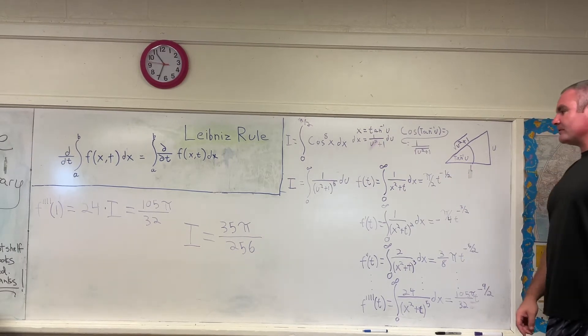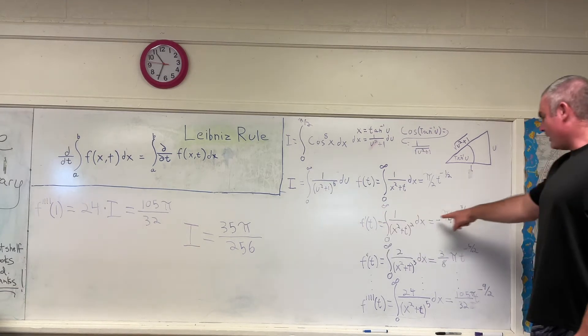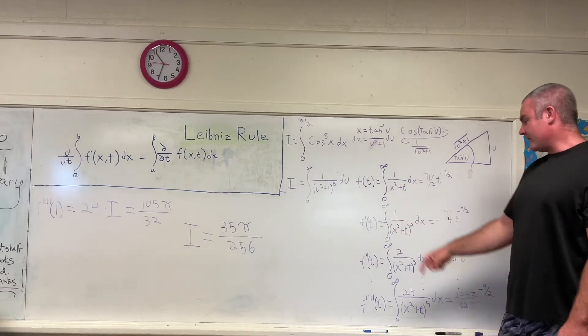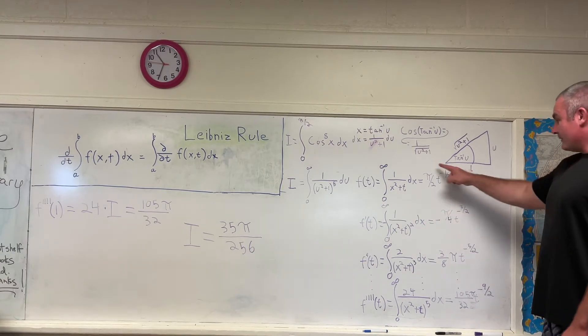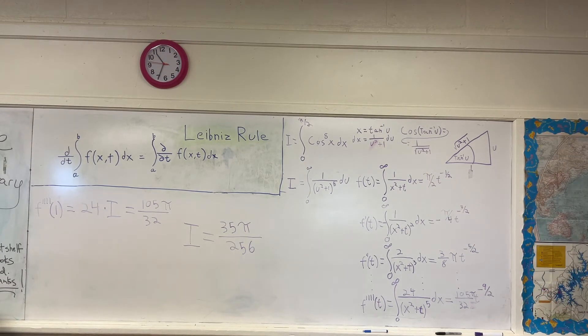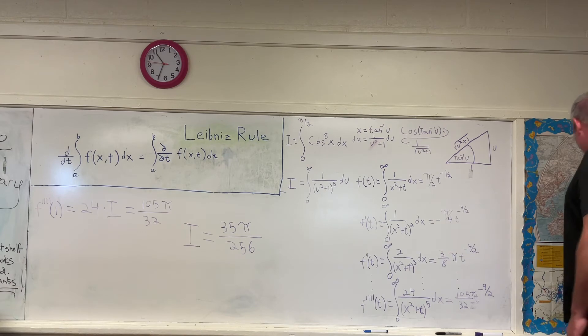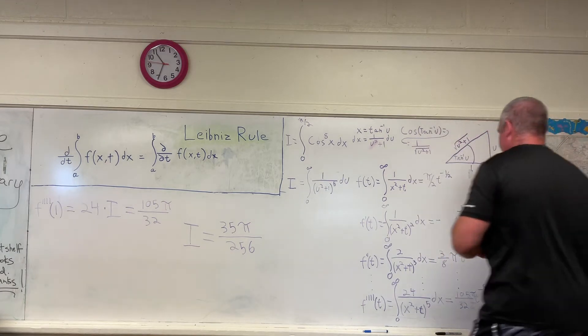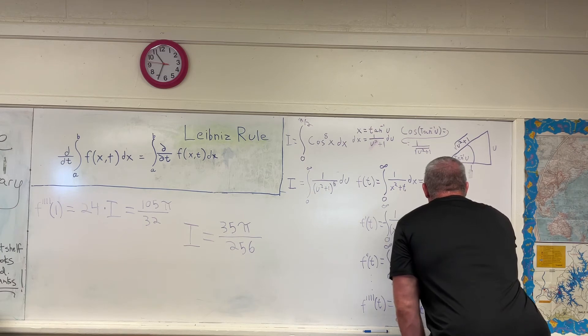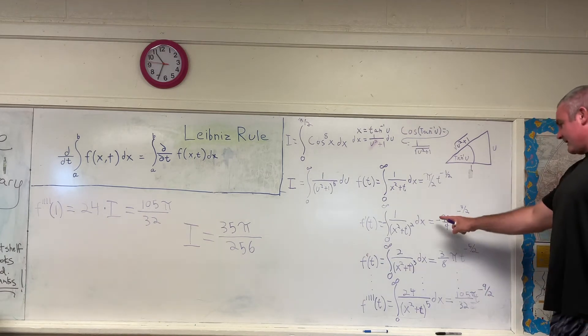Now what we're going to do is we're going to apply the Leibniz rule for differentiation under the integral side one, two, three, four times. You can see steps one. This is the first derivative of f of t. You get negative integral zero to infinity of 1 over x squared plus t all squared dx, and that is equal to the derivative with respect to t of this, which is pi over 4 times t to the negative three-halves. And this kind of looks like I wrote pi over 4t to the negative three-halves, so I'm going to rewrite that again. This is negative pi over 4 times t to the negative three-halves. And again, this is a negative sign there.